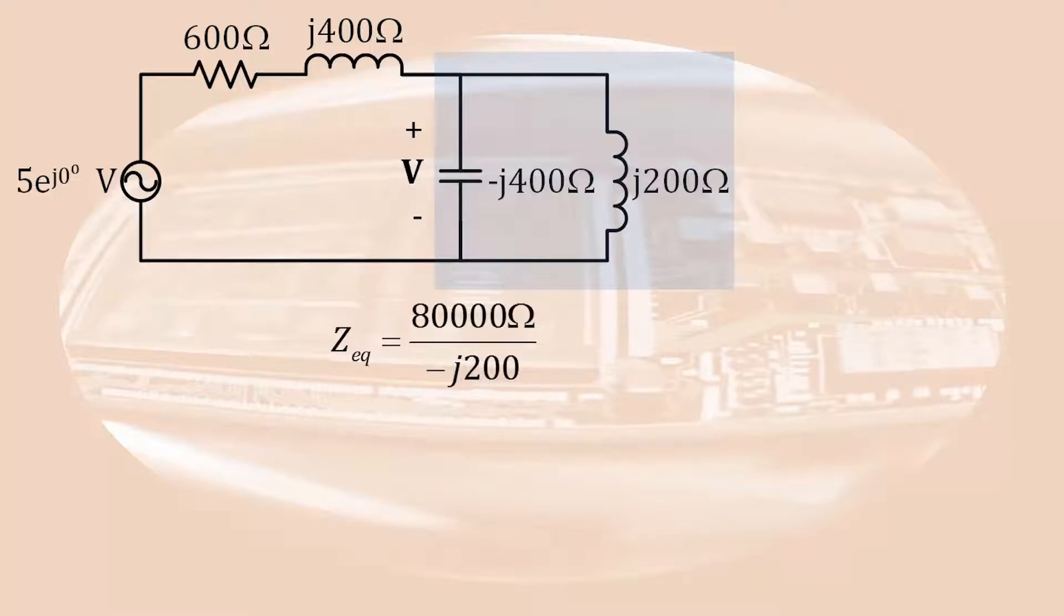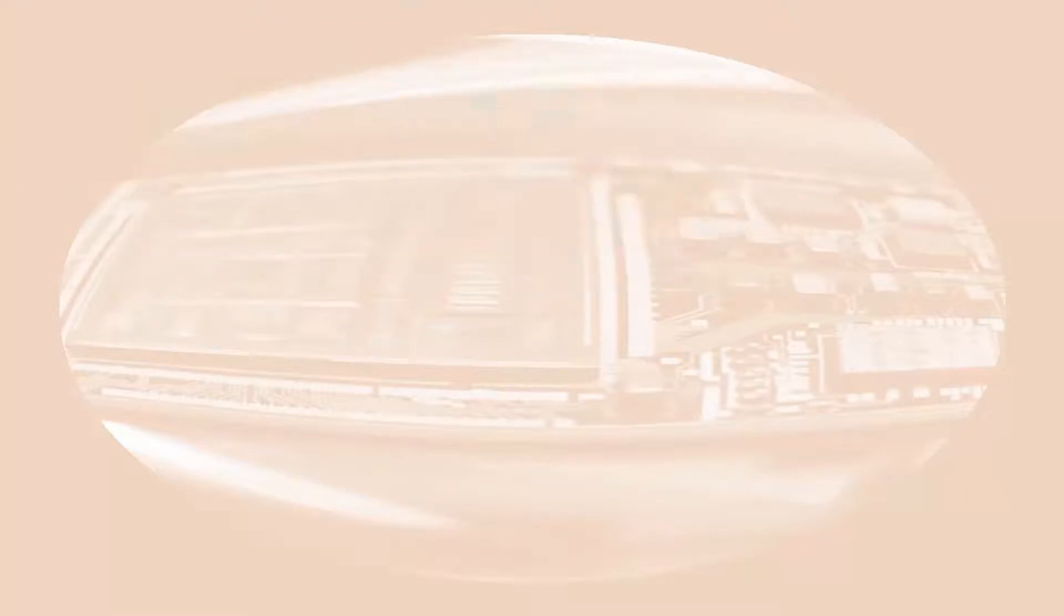This product over sum only works for two components. If you try three, it will just make a mess. And some complex arithmetic results in an equivalent impedance of J400 ohms. This value may be slightly unexpected.